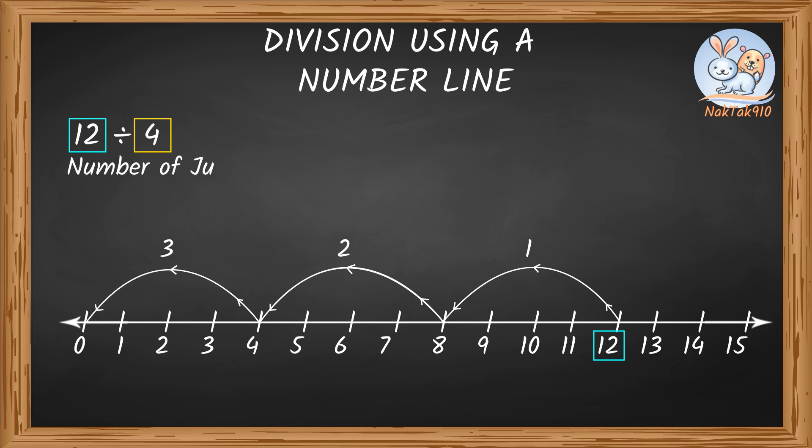So that means the number of jumps we made is 3. So the quotient here is 3.